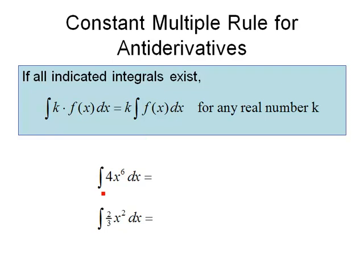So for instance, suppose I want to find the antiderivative of 4x to the 6 dx. The constant 4 can be pulled out in front of my antiderivative, giving me 4 times the antiderivative of x to the 6 dx.